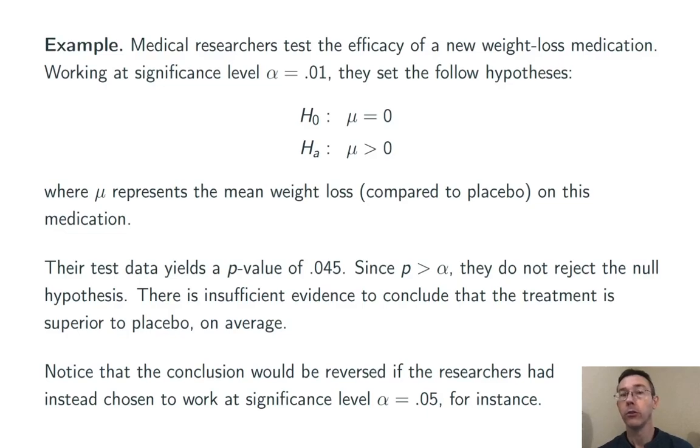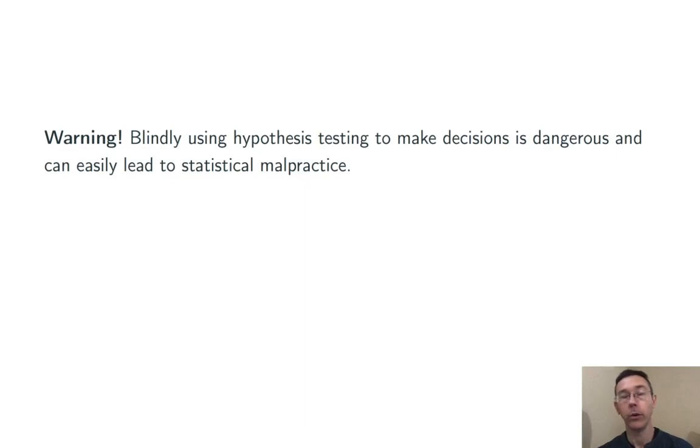Notice, however, that the conclusion would have been reversed if the researchers had instead chosen to work at significance level alpha equals 0.05. This illustrates one of the dangers about significance testing in general and using cutoff values alpha in particular. It's dangerous to blindly use hypothesis testing to make decisions.